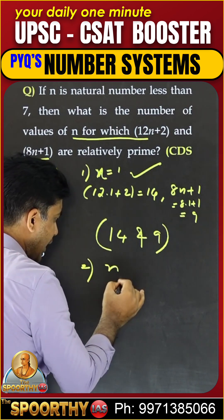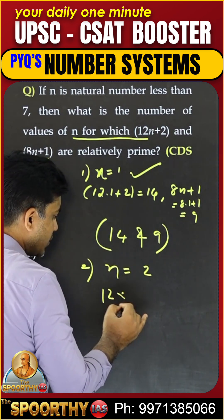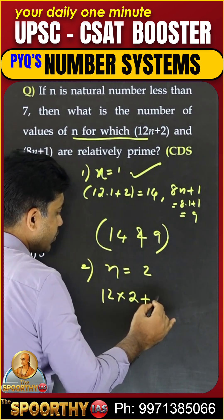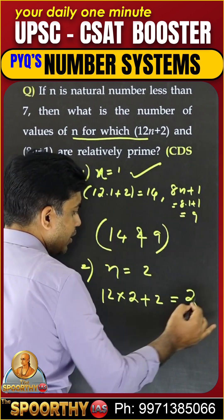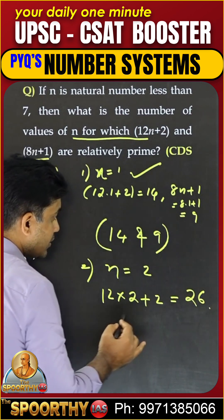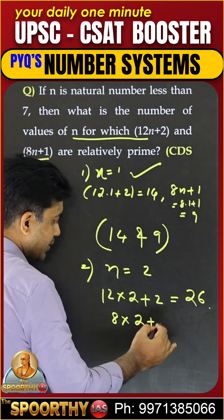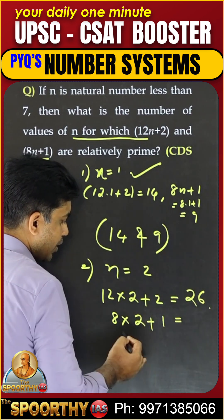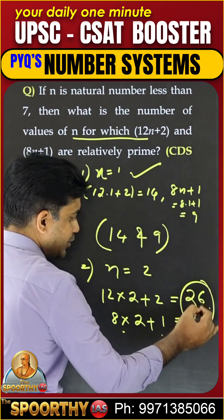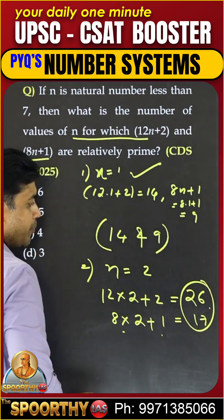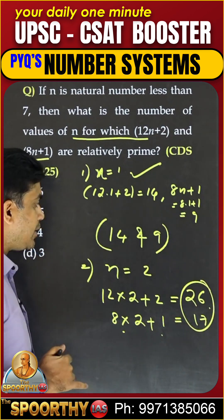Second case: go in order, n equal to 2. So 12 into 2 plus 2 is 26, and 8 into 2 plus 1 is 17. Again, 26 and 17 have no common factors. This is the second case.